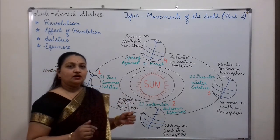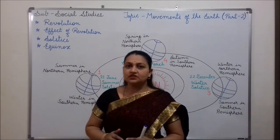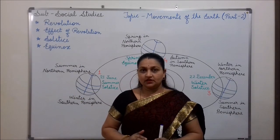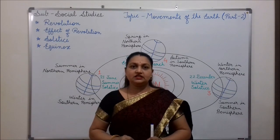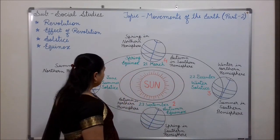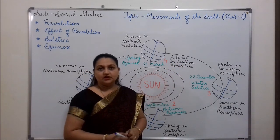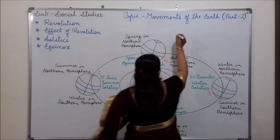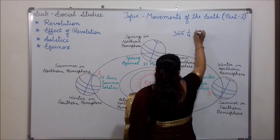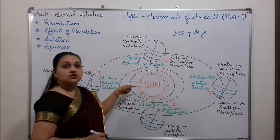While spinning on its tilted axis, the earth also moves around the sun on a fixed path. This movement of the earth is called revolution. The fixed path on which the earth moves around the sun is called orbit. The earth takes 365 and 1/4 days to complete one revolution around the sun.